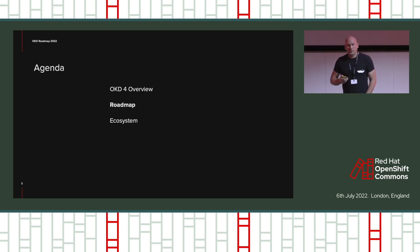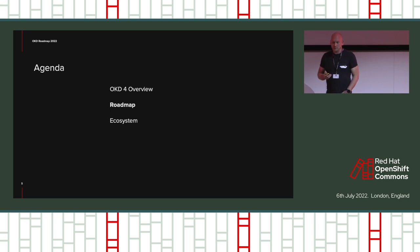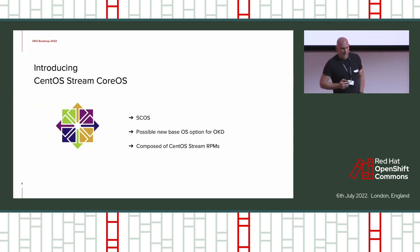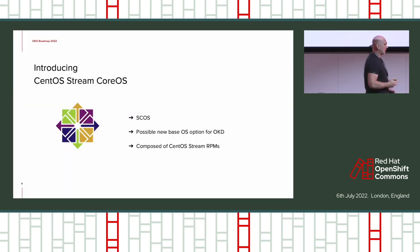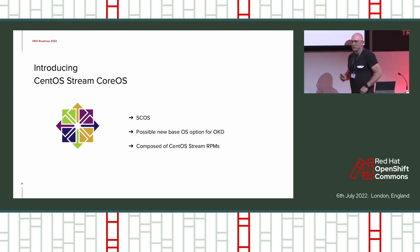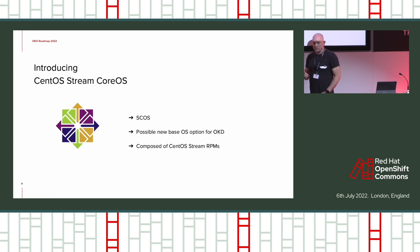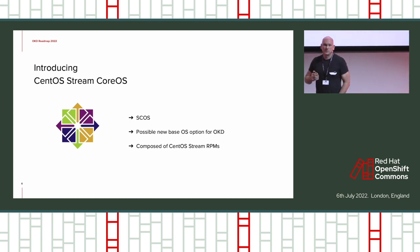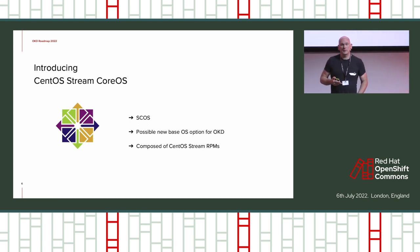So what we're going to do is look at some of the things coming up in OKD — the roadmap. The first thing we want to talk about is CentOS Stream CoreOS.